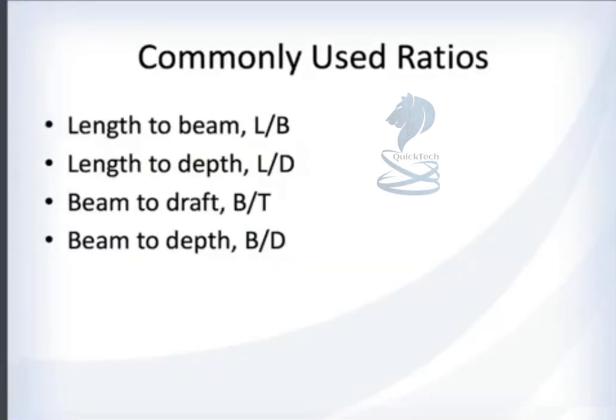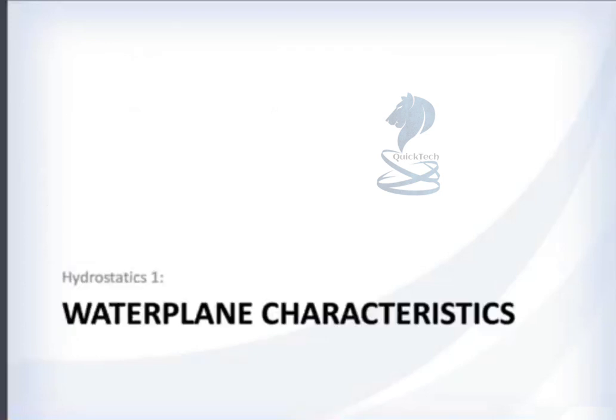Now with these numbers, we can start to compare ships. Commonly used ratios are length to beam, length to depth, beam to draft, and beam to depth — not very inventively named, but important to know.